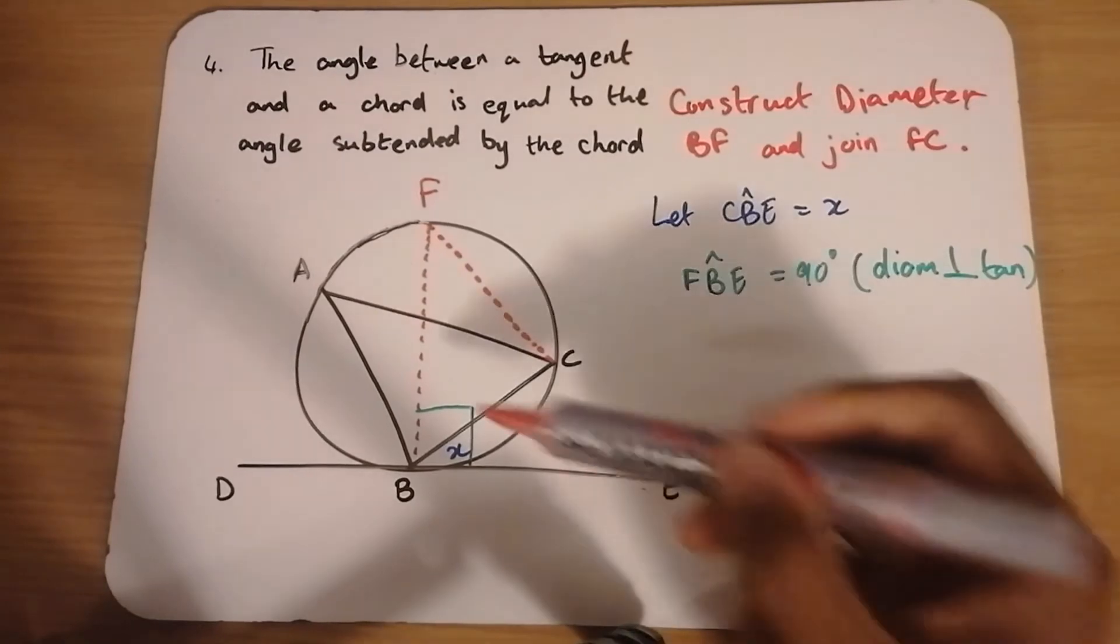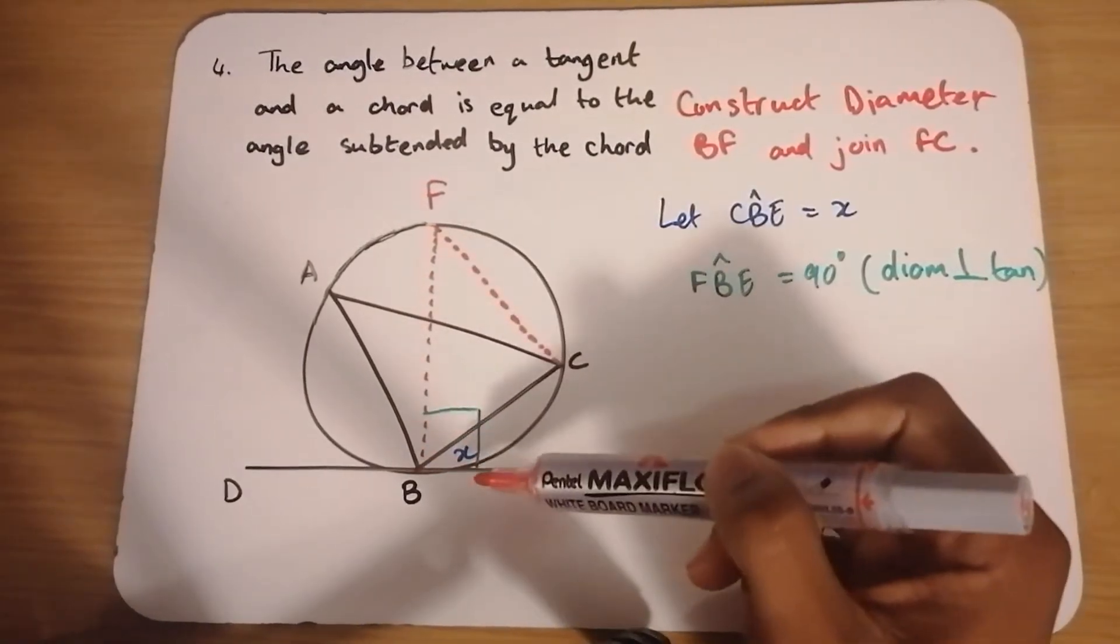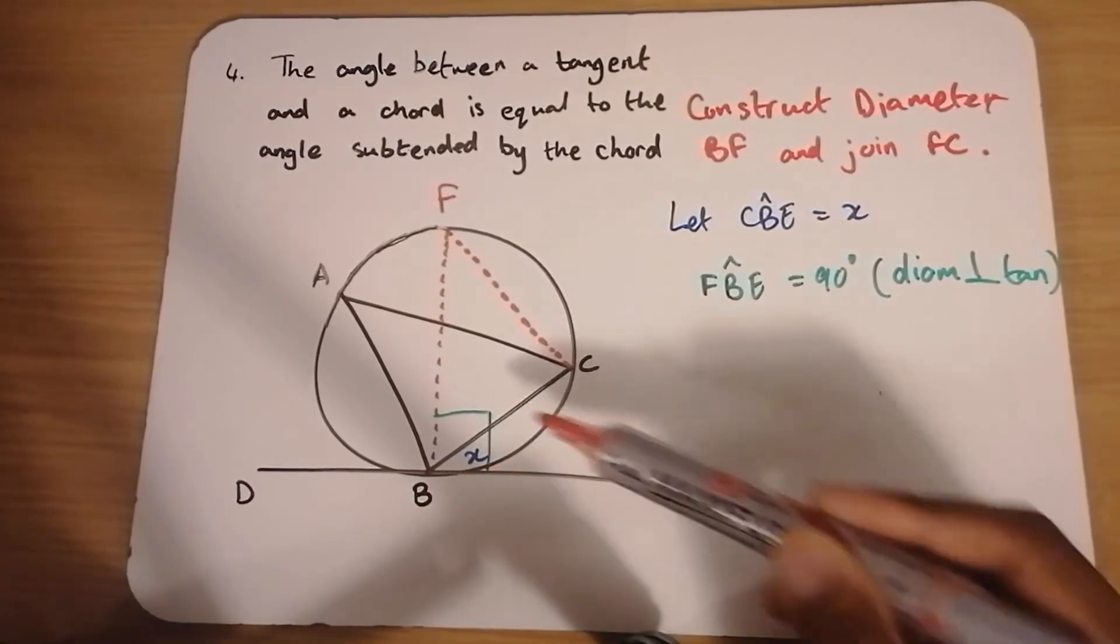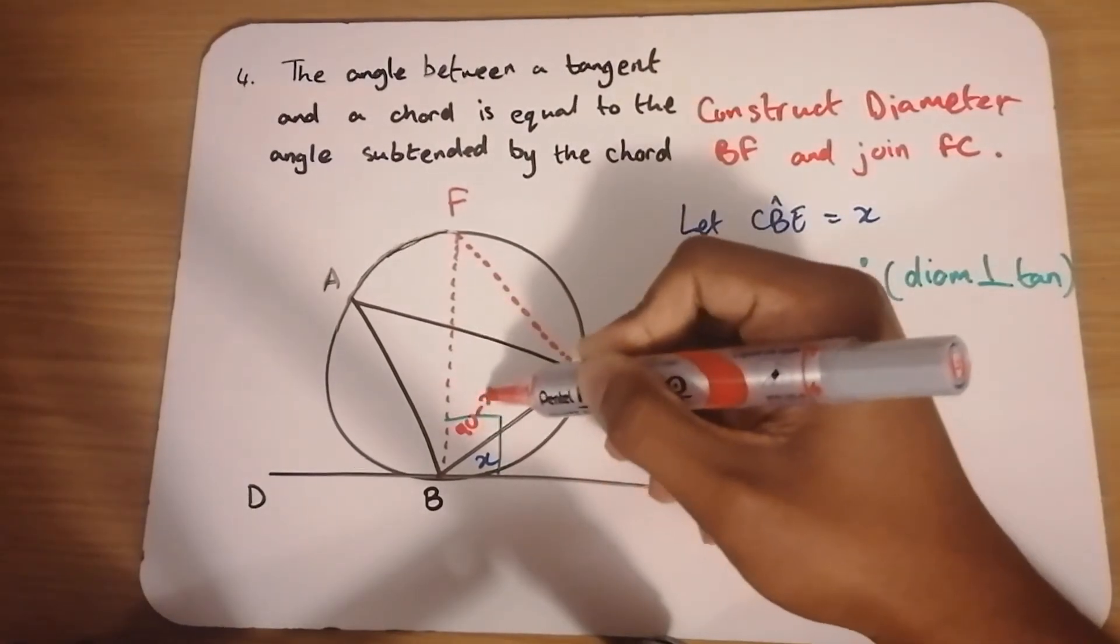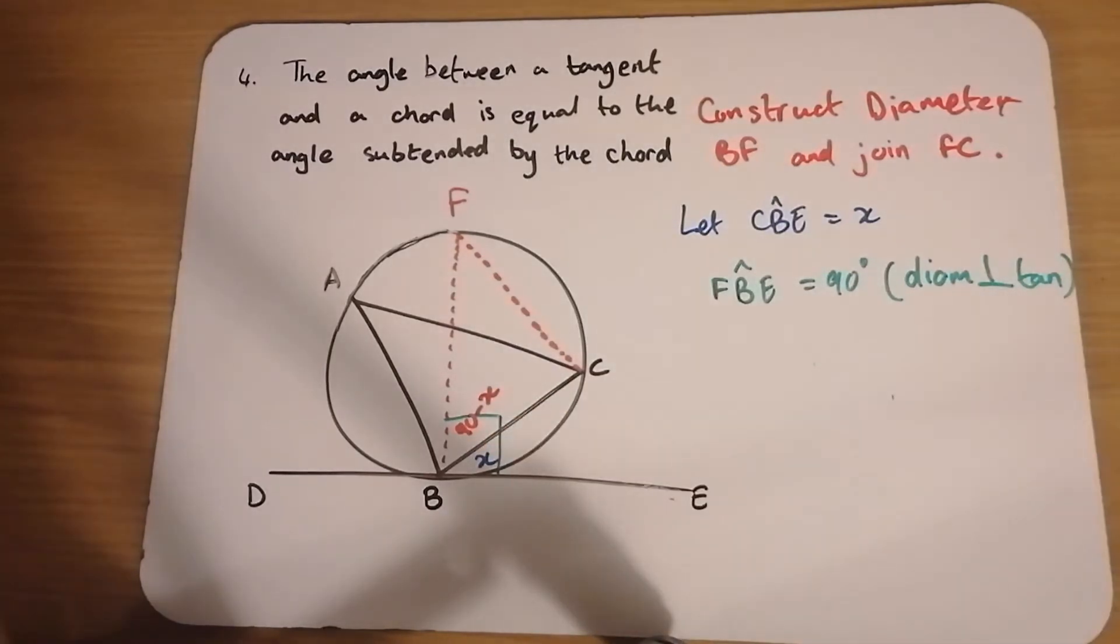Notice now, if this angle, if the whole angle FBE is 90 and angle CBE is X, then this remaining bit will be 90 minus X. It will be whatever is left of that 90 degrees after we take away X.